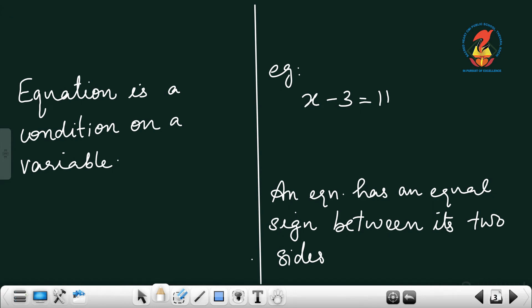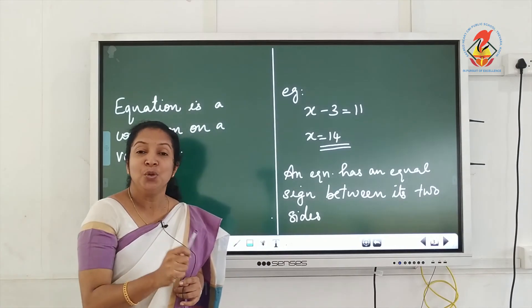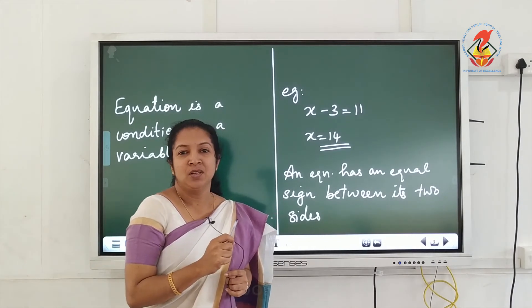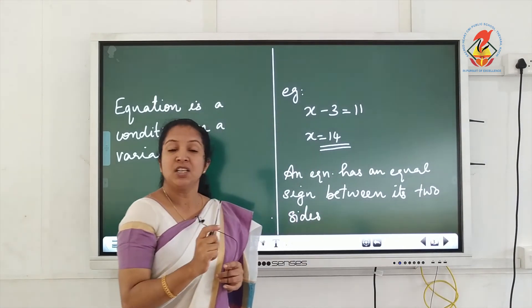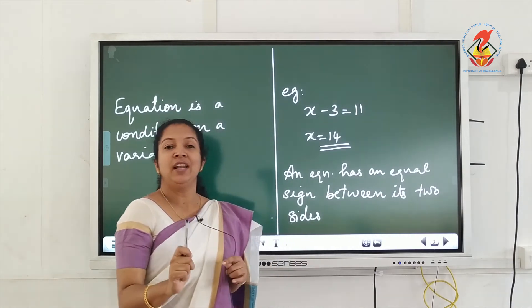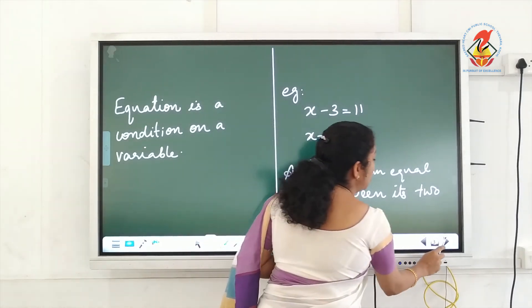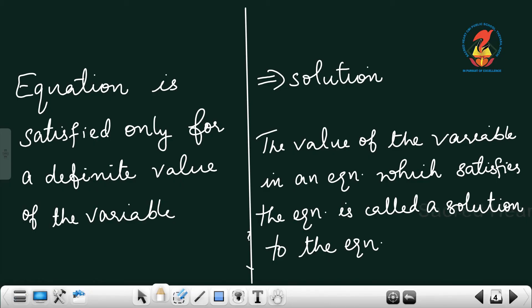Can you tell the value of X? This value should be 14. So X has a particular value, which is 14. This equation is satisfied only for this particular value, X equals 14. That particular value is known as the solution of the equation. An equation is satisfied only for a definite value of the variable, and that value is called the solution of the equation.